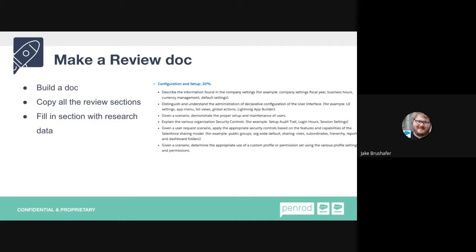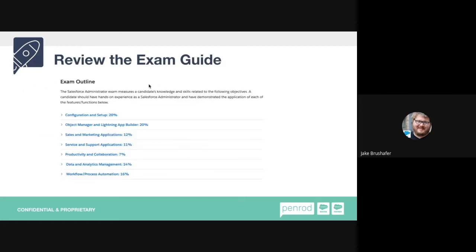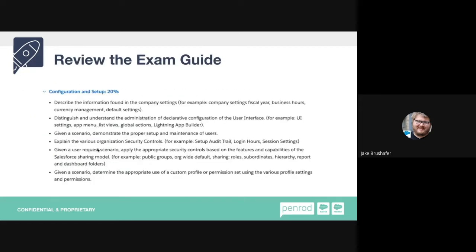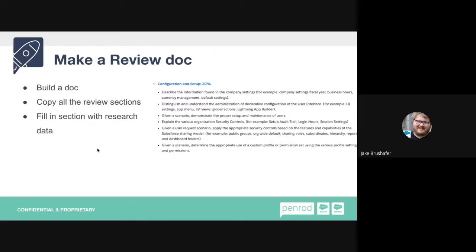I use the exam guide as my guide to prepare for the test. What I do is build a document — I copy all the different sections from the exam outline and paste them into an Excel or Word doc. Then I fill in each section with all my research data. I build the document first, then do all my studying and fill in the information, creating a study guide. If I can't find information on a topic like 'community settings,' I know I need to research that area more.